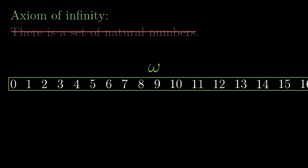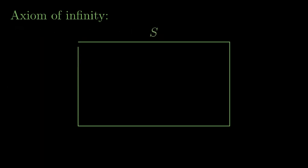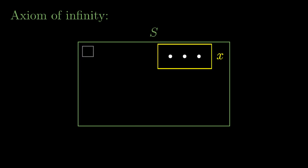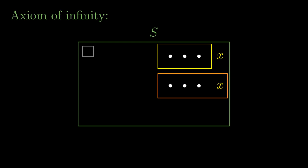So it is a bit more complicated. In fact, the axiom of infinity exactly states the following: there is a set S which contains the empty set, and with every set X it also contains the set X with X added as an element.